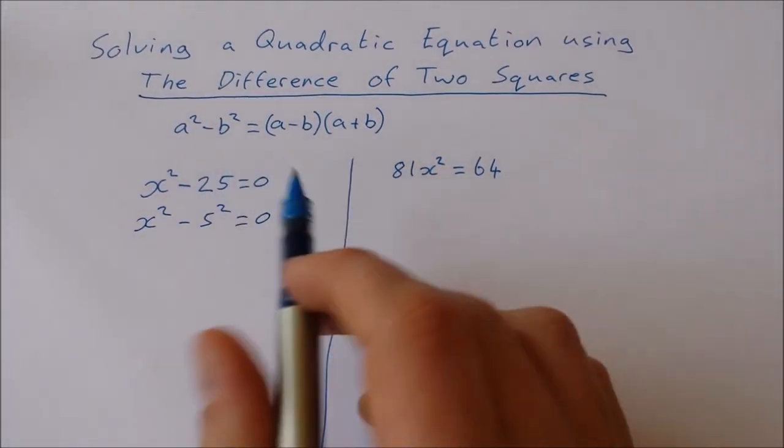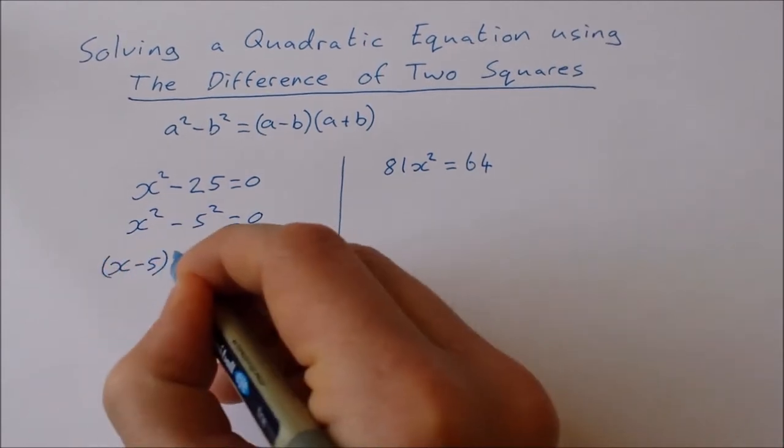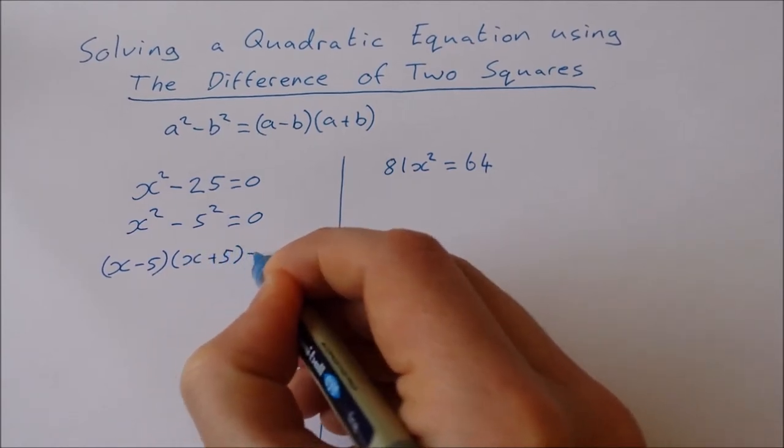Now I can factorize it in this form here, so it's going to be (x-5) times (x+5) is equal to 0.